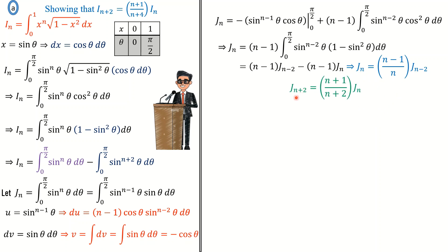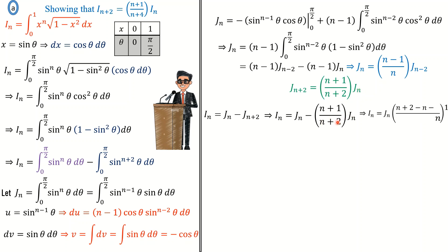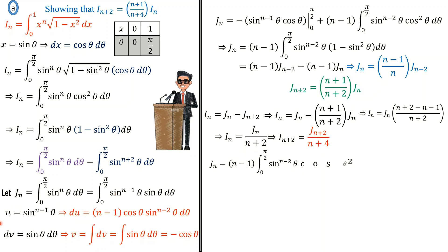From there I can write J(n+2) equal to (n+1)/(n+2) times J(n). Now since I(n) equals J(n) minus J(n+2), I substitute J(n+2) in terms of J(n) and factor out J(n), giving I(n) equal to J(n) divided by (n+2). I also need I(n+2), which equals J(n+2) divided by (n+4) when n is replaced by n+2 in that expression.